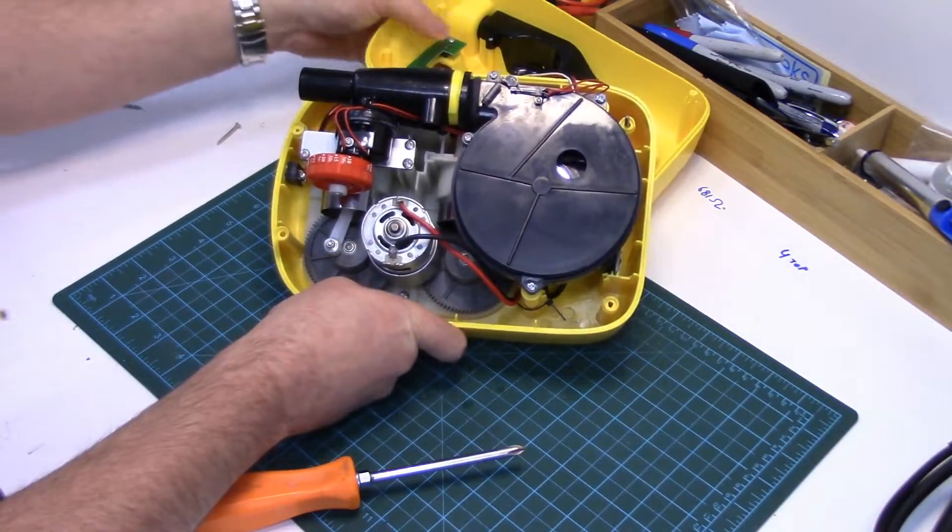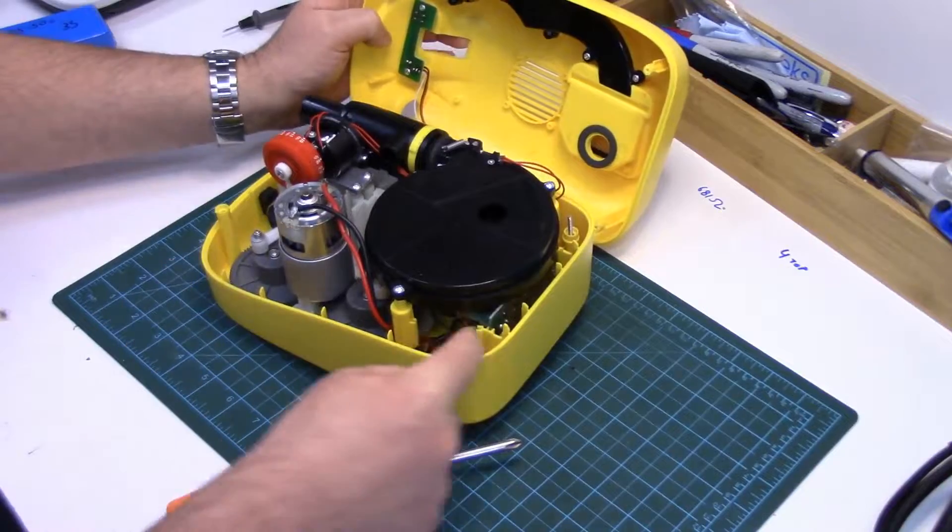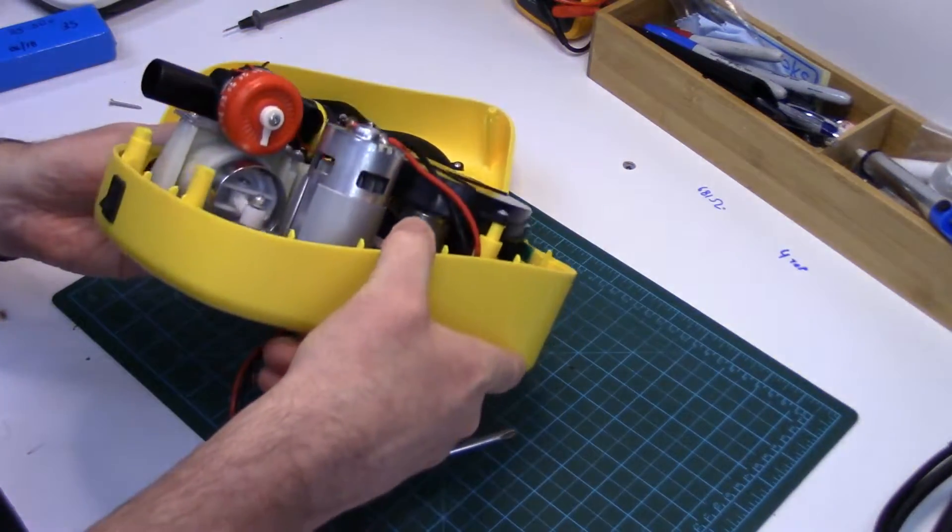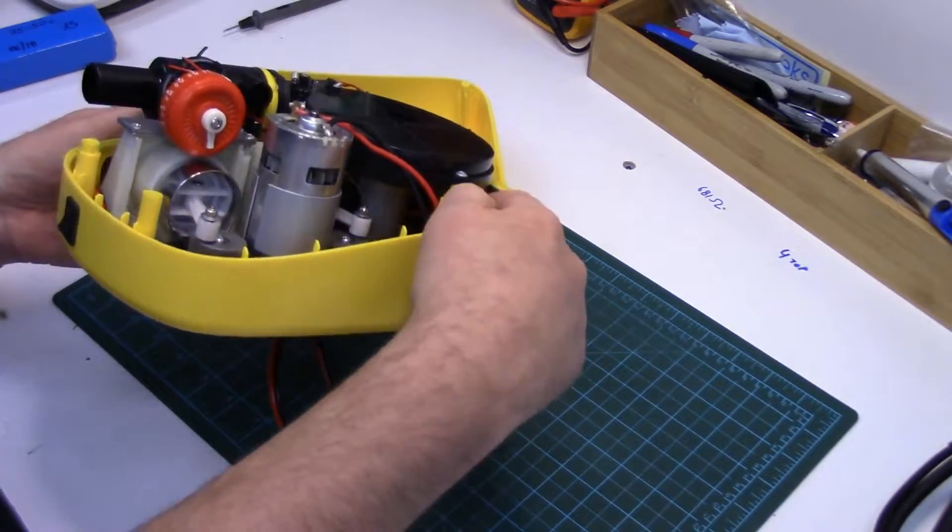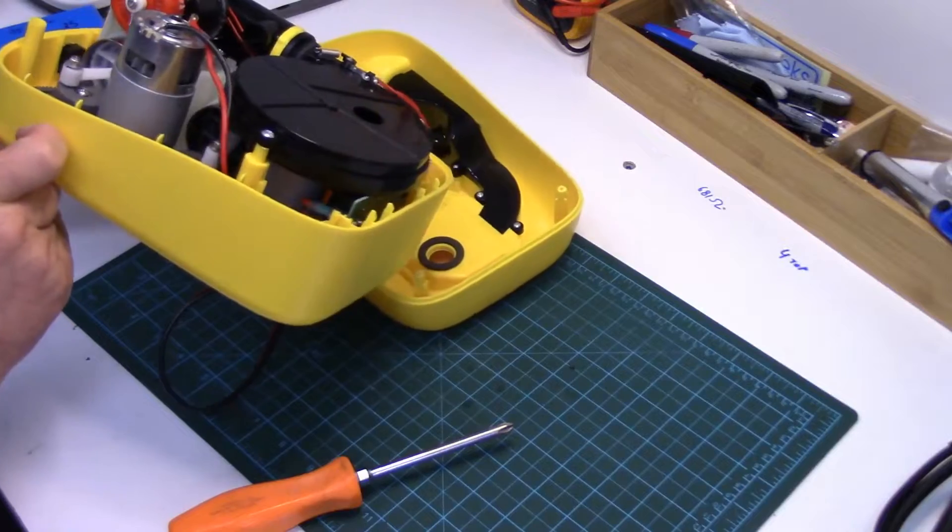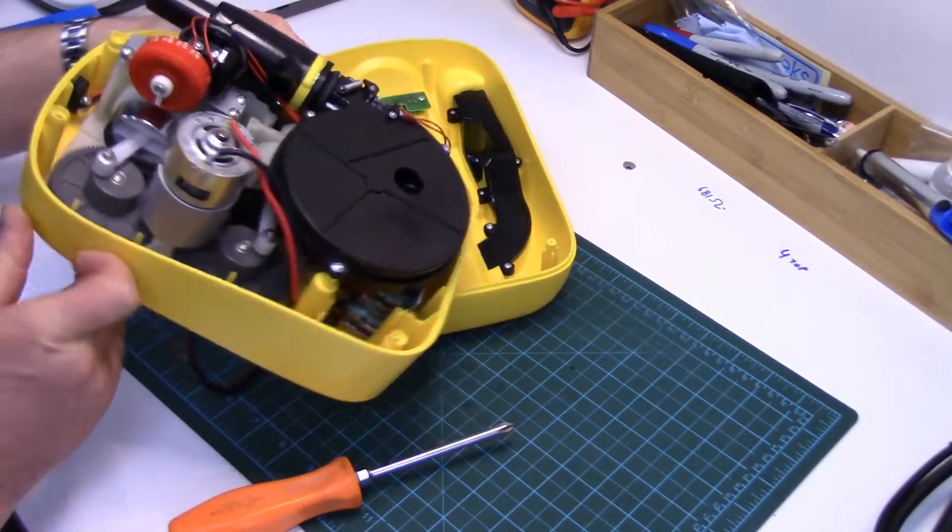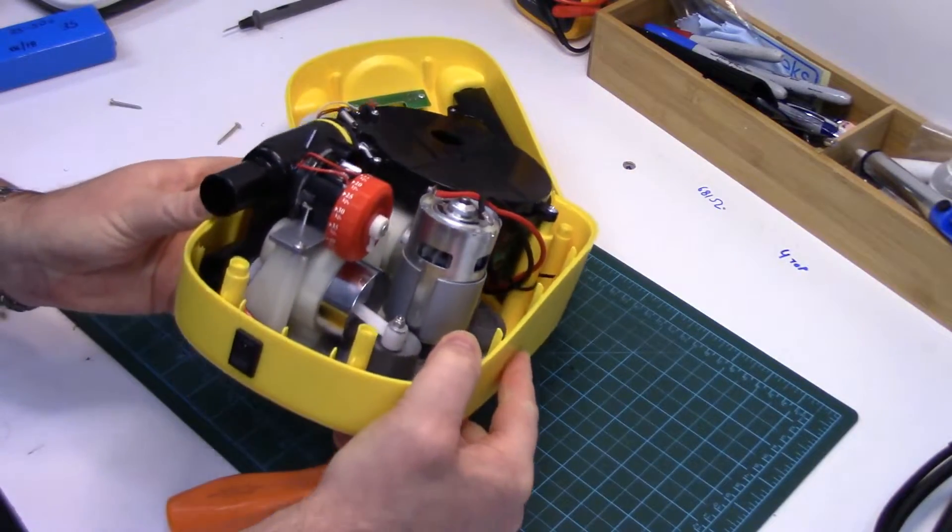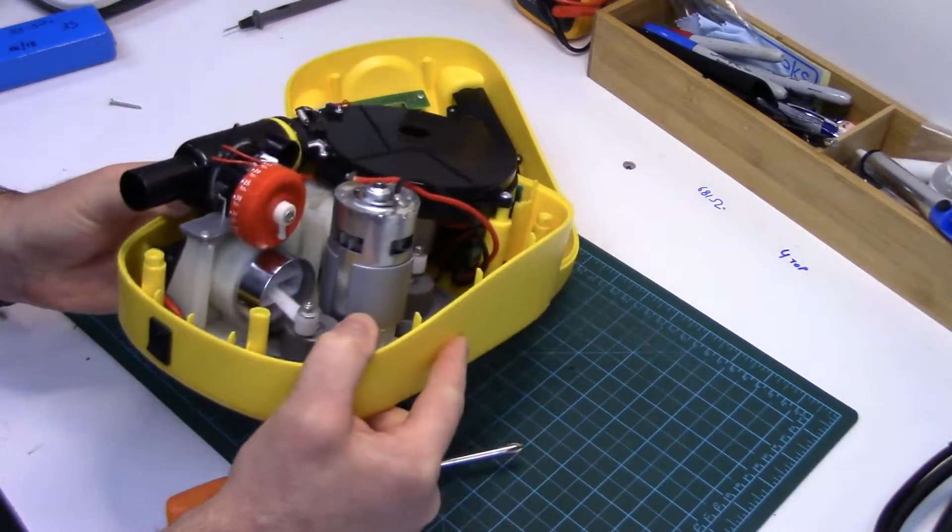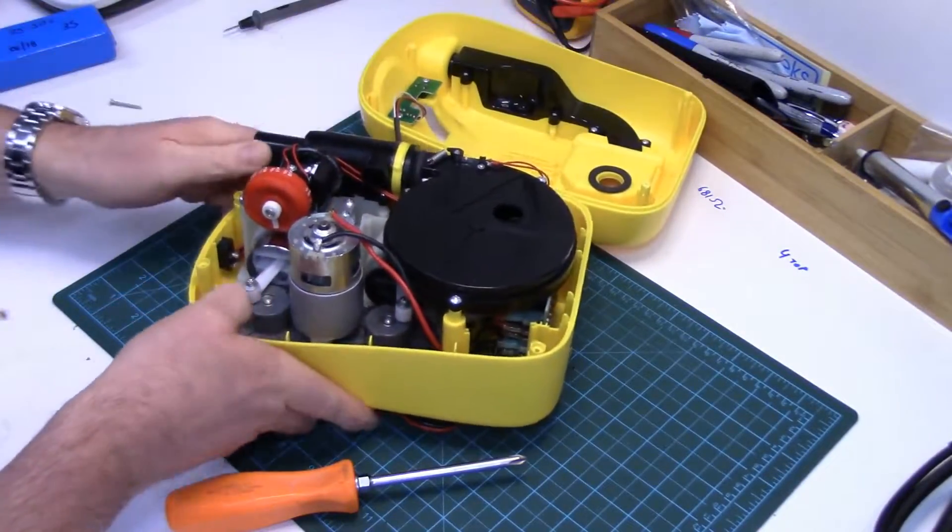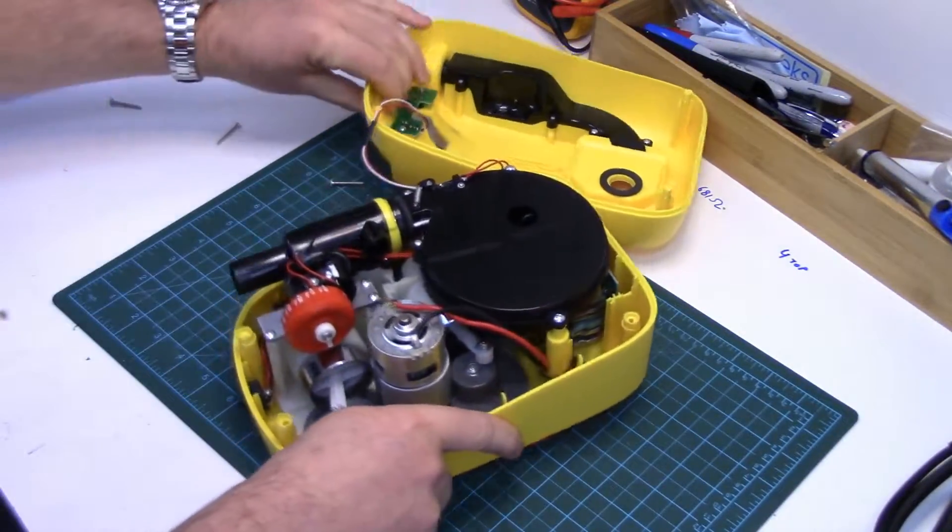And then there's a main circuit board in here. I'm not going to pull it out. I don't know if you can see down in there or not. Probably not. But it looks like there's two relays. And it doesn't even look like there's a logic board on there. It's all analog control. And we'll check this out to see how it actually works.